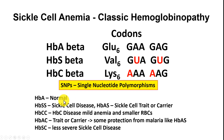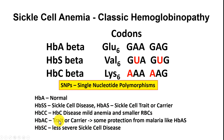HBS is the most severe disease. HBA is normal. HBS is sickle cell disease. HBAS is sickle cell trait or carrier. HBCC is HBC disease — a mild anemia with smaller red blood cells. HBAC is trait or carrier, with the same malaria protection. HBAS genes are kept around because they provide some protection from malaria. HBSC is a less severe sickle cell disease.